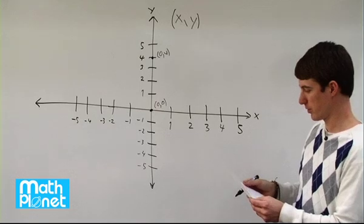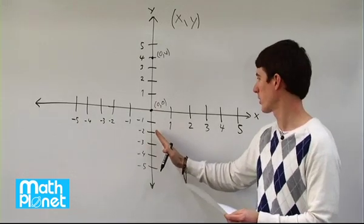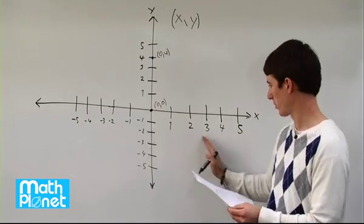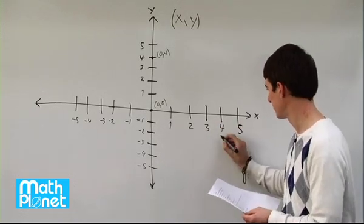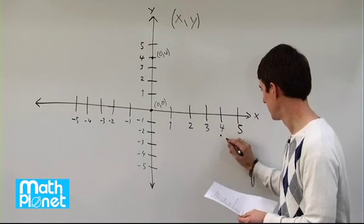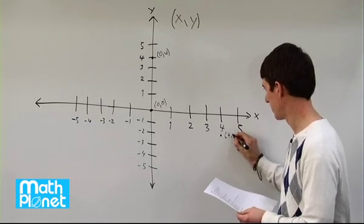Then we have 4, 2, so now we have x is 4, so we go to the right, positive 4, 1, 2, 3, 4, and y is negative 2, 1, 2. So right here, 4, negative 2.